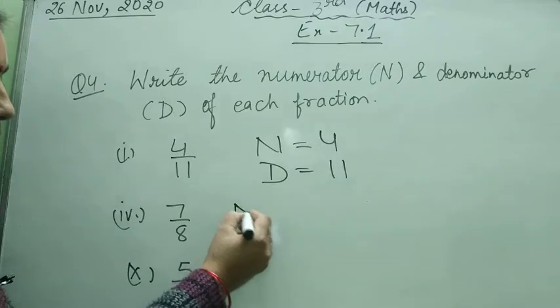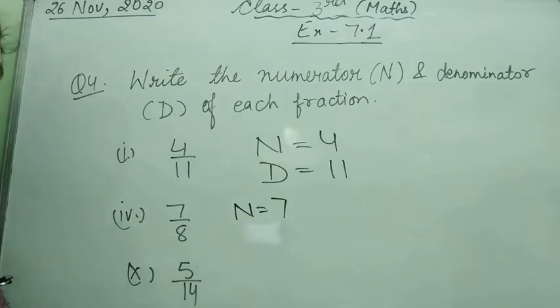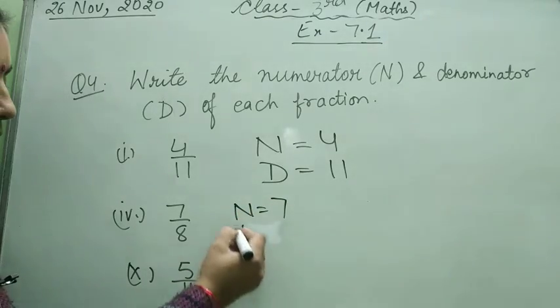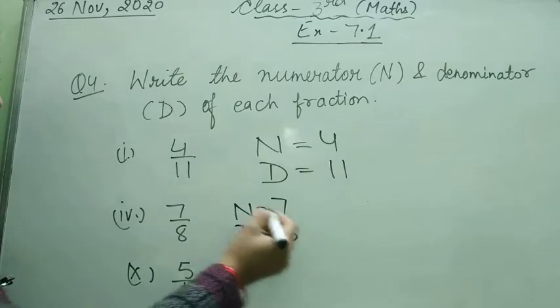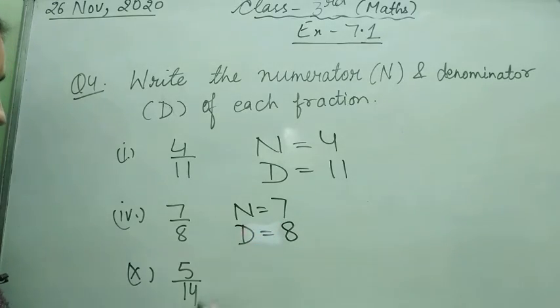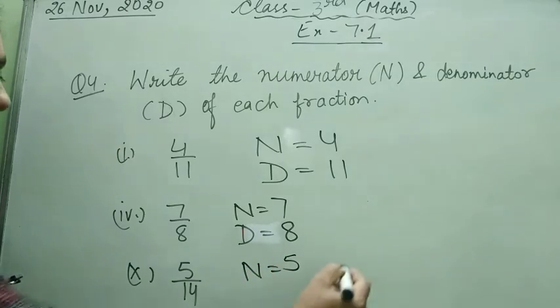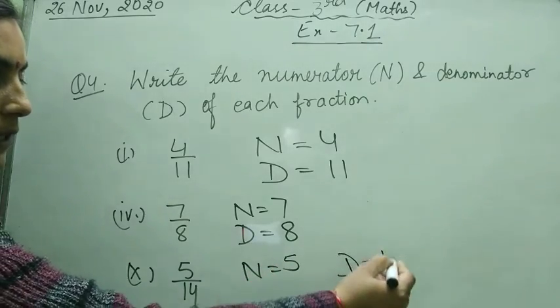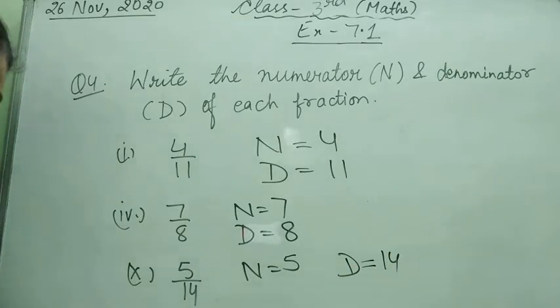In the second part, what will be the numerator? 7. And what will be the denominator? 8. These are easy questions. In the 10th part, numerator equals 5 and denominator equals 14. Clear?